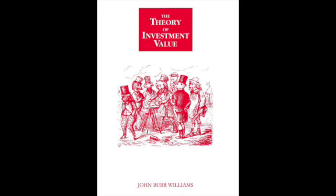If by refunding its bonds at a lower rate and replacing its preferred stock with low-coupon notes a company saves a dollar a share in senior charges, then — assuming that dividends are capitalized at 5% and earnings at 10%, the usual rule of thumb — it adds $20 a share, and not $10, to the value of its common stock. If, on the other hand, a company is forced to refund a maturing issue at a higher rate, as might happen if its bonds came due during a banking crisis, then the decrease in earnings per share resulting from the higher interest charges would have to be capitalized at 20 times, and not at 10 as would an ordinary change in earnings.